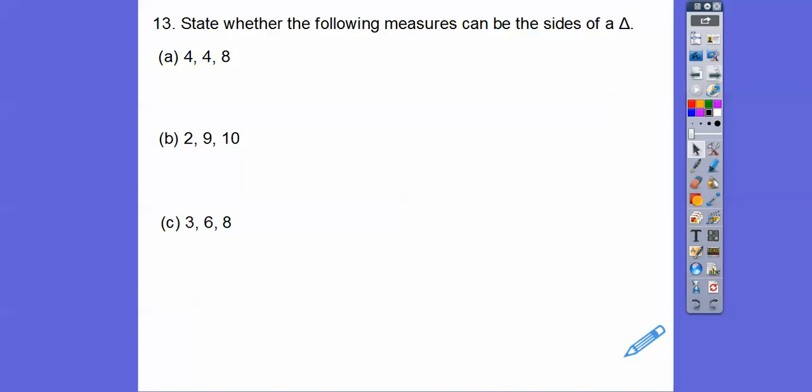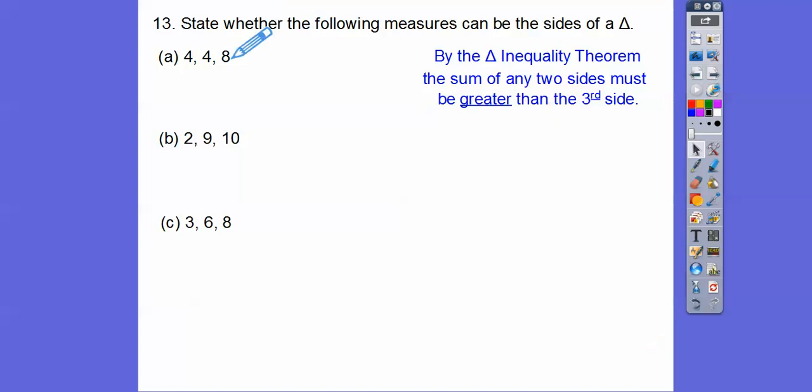State whether they can make triangles. The triangle inequality theorem says you have to add two sides together and it has to be greater than the third side. Is 4 plus 4 greater than 8? No, it equals 8. It has to be greater than, so this is a no. It must be greater than. 2 plus 9 is 11, greater than 10. 3 plus 6 is 9, greater than 8. So no, yes, yes.